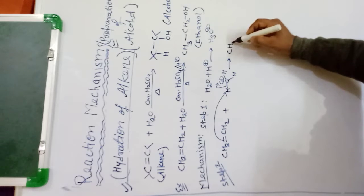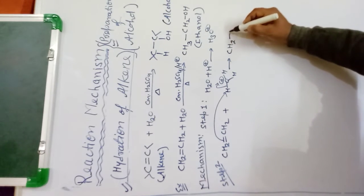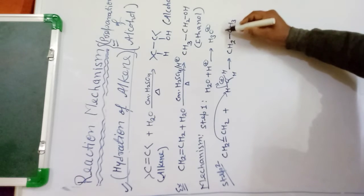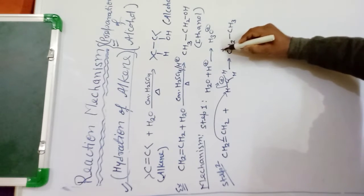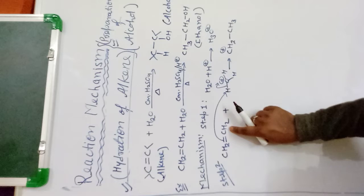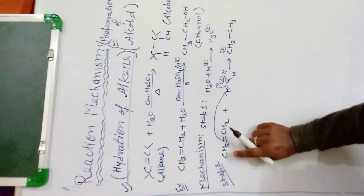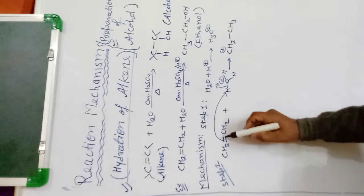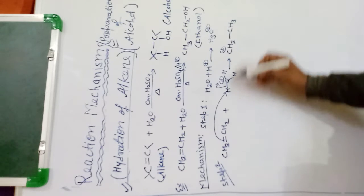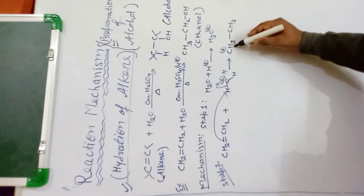The pi bond attacks this hydrogen: the H attaches to one carbon, making it CH₃, while the other carbon loses the shared electrons and gains a positive charge. This gives us the carbocation intermediate CH₃CH₂⁺.